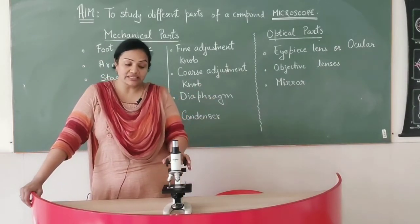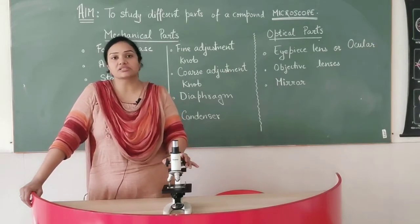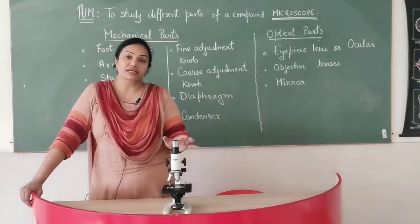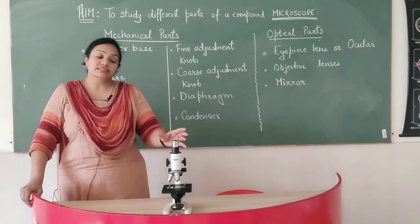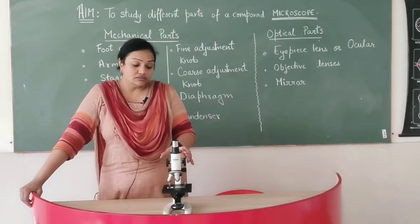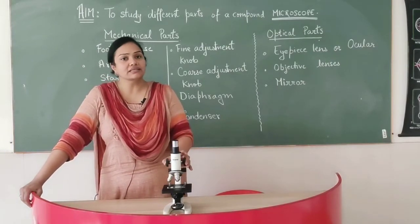So we need a special aid or a special tool which helps us to see those organisms. This is a compound microscope which helps us to see such kind of tiny particles. It can also help you to see cells and tissues.